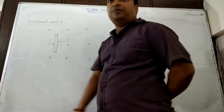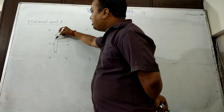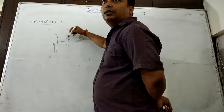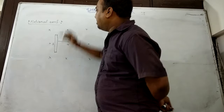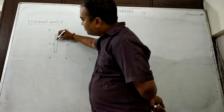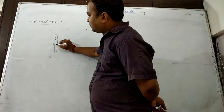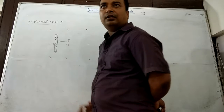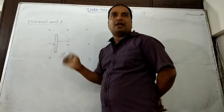Let this be balanced. When this rod is moving and it's made up of metal, then there will be lots of free electrons. Let these dots represent electrons.